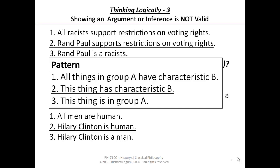And the conclusion is that Rand Paul is a racist — that is, this individual is a member of that first group. Same thing with premise three of the second argument: Hillary Clinton is a member of the group of men. So we see that the reason these are parallel arguments is that they have the same logical pattern. That pattern, as shown on the screen, is: all things in group A have characteristic B; this thing has characteristic B; therefore, this thing is in group A. And we know this is not a good argument. This pattern is a bad argument — the conclusion does not follow from the premises.